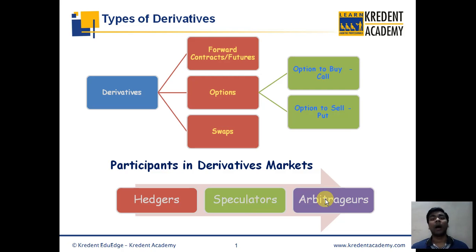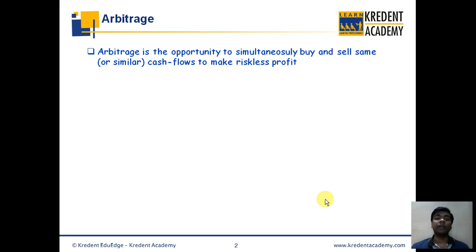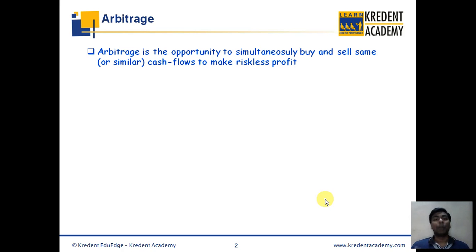The final category of participants are arbitrageurs, who try to make riskless profit. The technical financial definition of arbitrage is the opportunity to simultaneously buy and sell the same or similar cash flows to make riskless profit. Let me explain this in simple words.